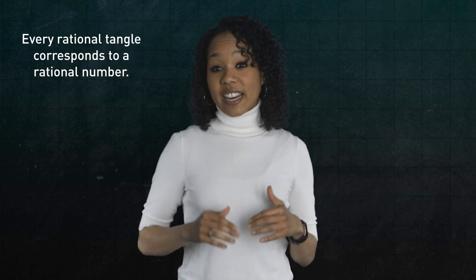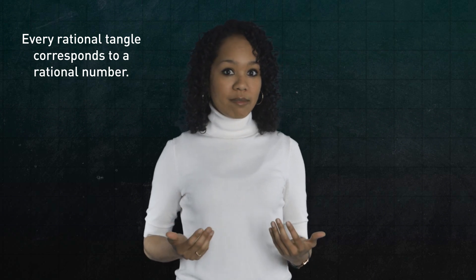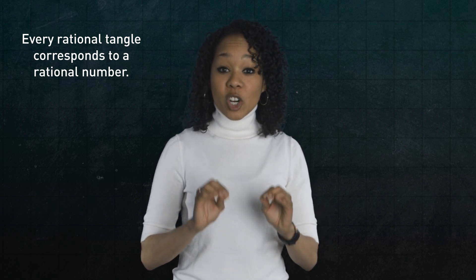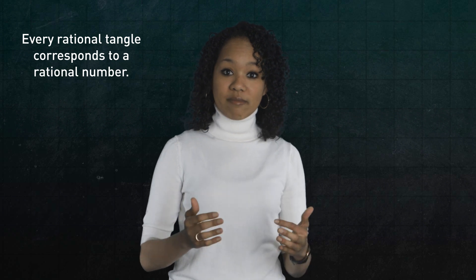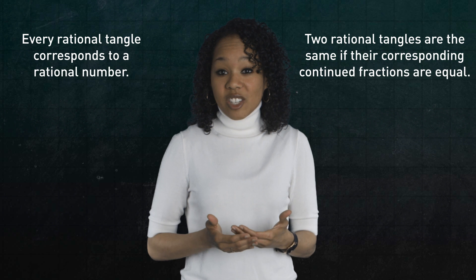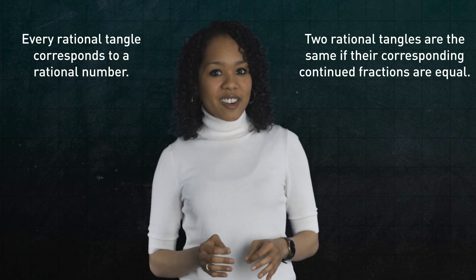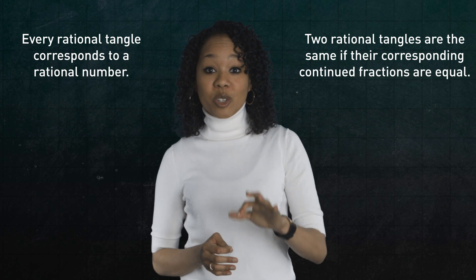The upshot is that every rational tangle corresponds to a rational number. But, even better, the tangle is uniquely determined by its rational number, meaning any two rational tangles whose continued fractions are equal are the same rational tangle. In particular, the converse to the story also holds.